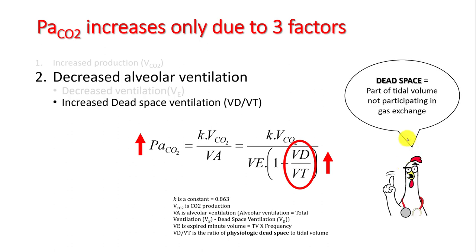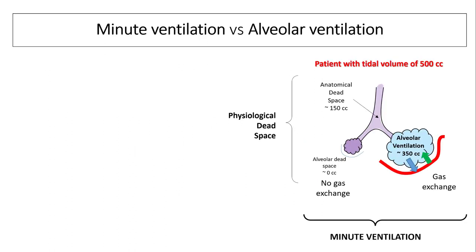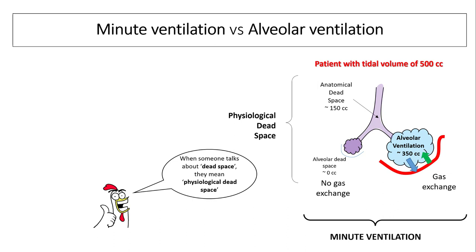Dead space is the part of the tidal volume not participating in gas exchange. In a normal person, the tidal volume of 500 cc has around 150 cc remaining in anatomical dead space and around 350 cc going to the alveoli. The portion that goes to alveoli is called alveolar ventilation, where gas exchange can happen. There may be a part of the alveoli that doesn't participate in gas exchange — this is called alveolar dead space. In normal humans, there is typically no alveolar dead space. Physiological dead space is a combination of anatomical and alveolar dead space.